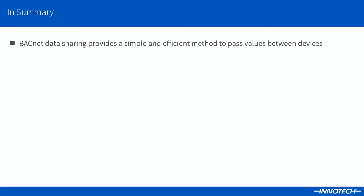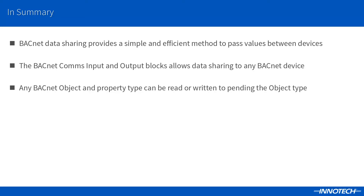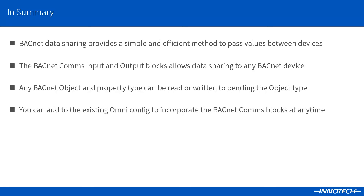In summary, BACnet data sharing is a very simple and efficient method to share data values and control throughout the BACnet network. We use the BACnet comms input and output blocks available with OMNI to configure data sharing to any network BACnet device and available objects. Using the BACnet comms blocks we can target any BACnet object and property, including reading and, if allowed, writing to specific BACnet objects within the network. The option to utilise the BACnet blocks within the OMNI configuration can be done at any time during the project.